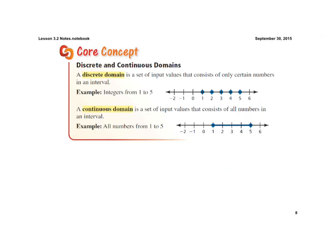This is what we talked about in the very first slide — writing down the definition of a discrete domain and a continuous domain. A discrete domain is a set of input values that consist of only certain numbers in an interval.